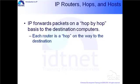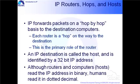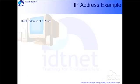IP forwards packets on a hop-by-hop basis to the destination computers. Remember, the devices that do this are called routers. An IP destination is called the host and is identified by a 32-bit IP address. Although routers and computers, otherwise known as hosts, read the IP address in binary, humans read it in dotted decimal. In this example, the IP address of a PC or host computer is...